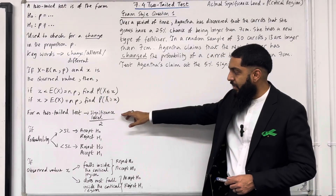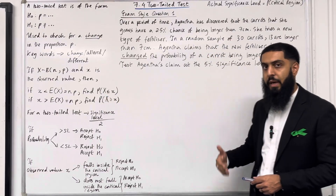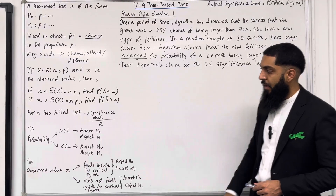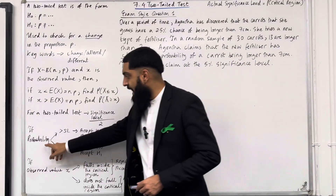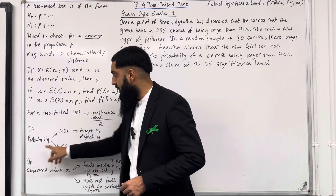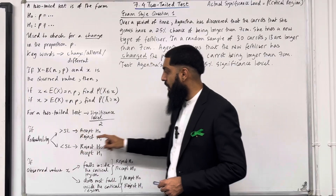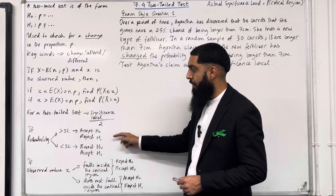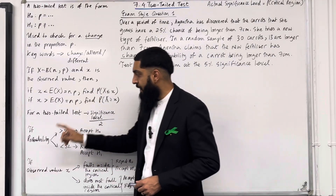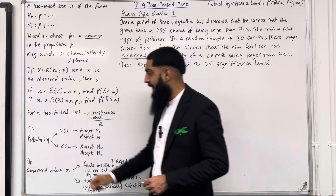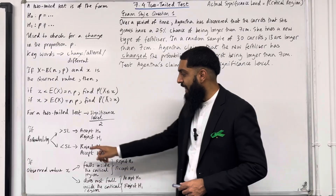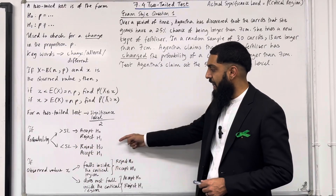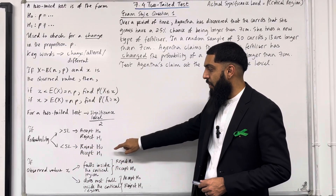For a two-tailed test, we must take the significance level and divide by 2. If the probability calculated is greater than the significance level divided by 2, we accept H0 and reject H1. If the probability calculated is less than the significance level divided by 2, we reject H0 and accept H1.